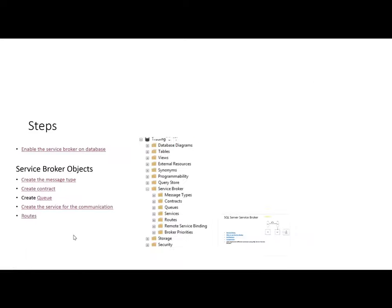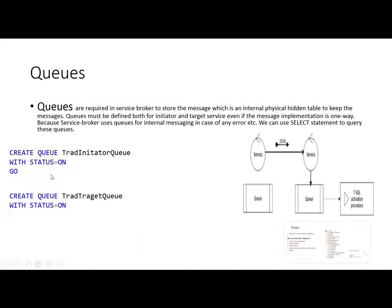After creating the contracts, the next step is to create the queue. Queues are used to store the messages. These queues are built-in hidden physical tables that keep the messages. We have to create a queue with each service. Even if the message direction is one-way — where only the initiator is sending the message with no need for a response — we still need to create a queue on both ends, because queues are also used by internal messaging. For example, if one service sends a message and the other service has an error for any reason, the queue is used to send back the error message to the initiator.